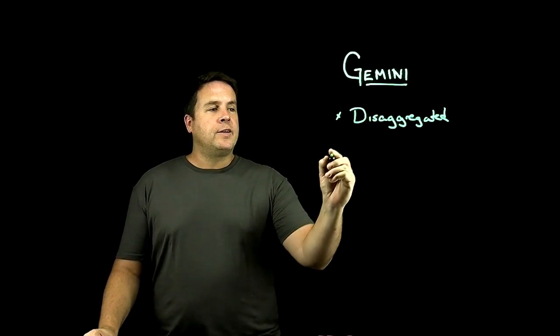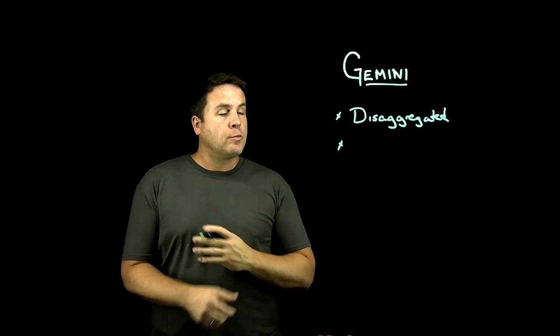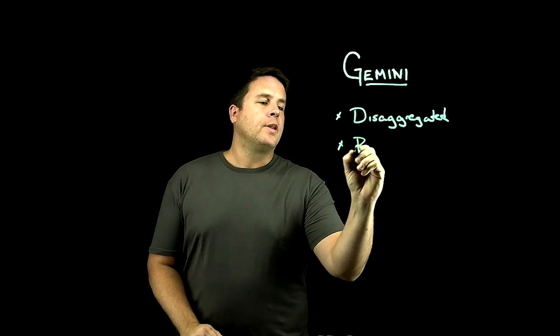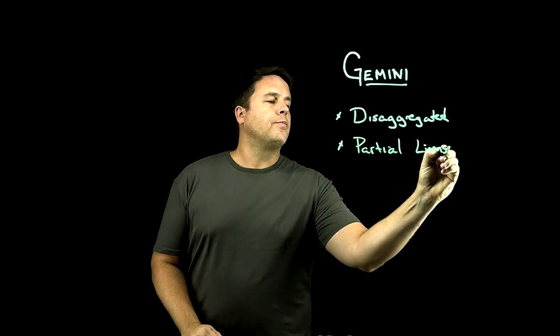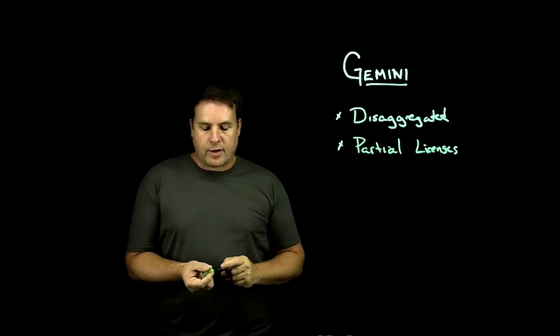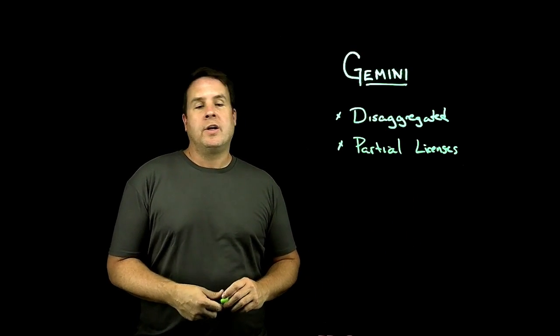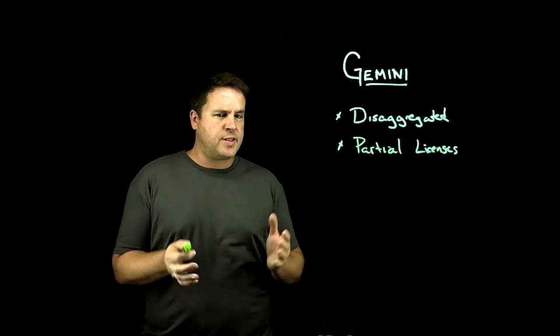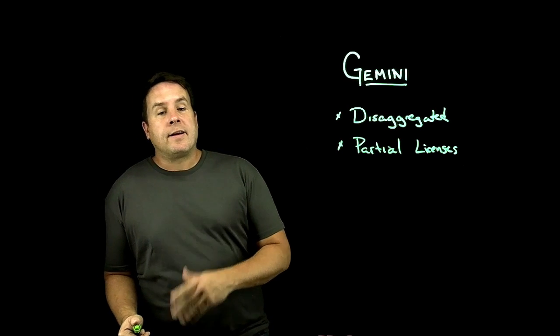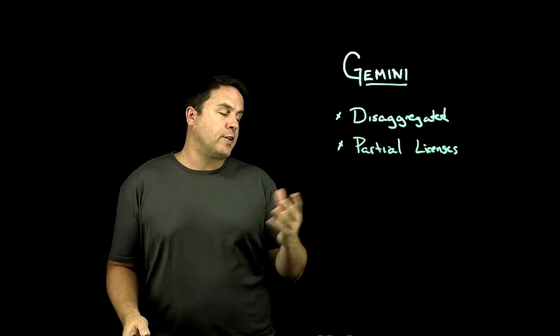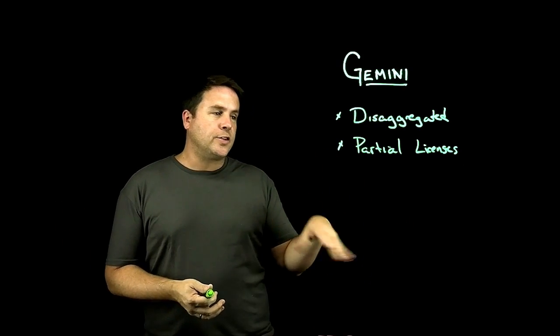The nice thing is you can make decisions about how much capacity to unlock completely on your own terms. Partial licenses are one of the nicest values of the Gemini offering. Customers can do installations within a single discrete event and scale into their investment over time without paying for all the software up front. Customers may buy more performance than the capacity they need to start, then scale over time.